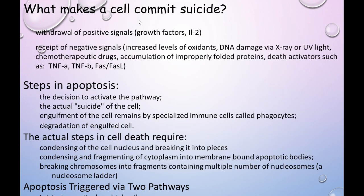What makes a cell commit suicide? There is withdrawal of positive signals and growth factors. When the cell does not receive positive growth signals, or when there are negative signals like DNA damage, elevated oxidant levels, X-ray or UV light exposure, or death activators such as FAS and TNF-alpha, the cell undergoes apoptosis. The actual steps of cell death include condensation of the nucleus, fragmentation of chromatin, cytoplasmic shrinkage, and breakdown of chromosomes into small fragments.